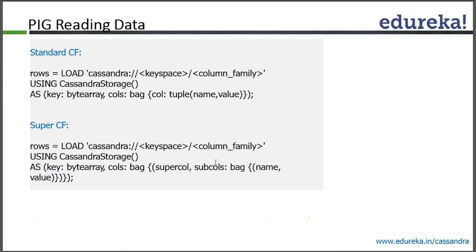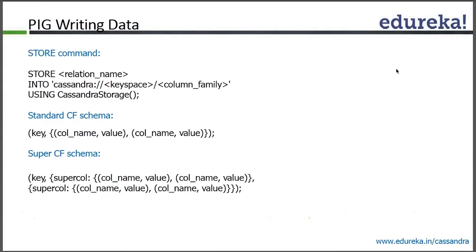When it comes to PIG interfacing with a standard column family, if you want to return all the rows from your CFS, you could just say load and give the Cassandra URL — cassandra://keyspace/columnfamily — using CassandraStorage as byte array and columns as a tuple of name and value, and that will give you all the rows you want to read inside PIG. Similarly for super column family, you can use the appropriate one. For the store command, you give the same Cassandra keyspace/column-family URL using CassandraStorage to store the data back to a Cassandra column family.